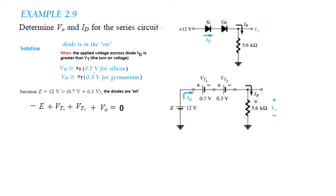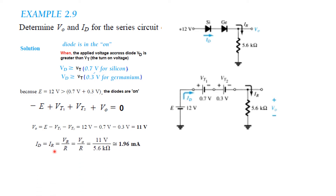By KVL we write: minus E plus VT1 plus VT2 plus V0 equals 0. Plugging in values, V0 equals E minus VT1 minus VT2, which is 12 minus 0.7 for silicon minus 0.3 for germanium. So VO, which is also VR, equals 11 volt. Now we find ID: ID equals IR equals VR over R, so V0 over R is 11 divided by 5.6K, giving ID approximately 1.96 milliampere.